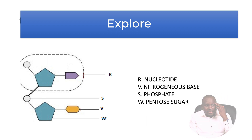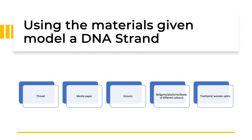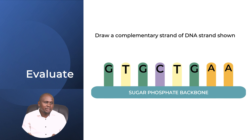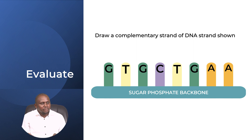We have explored the main parts. I've already mentioned the materials that can be used to come up with a model — we may look at modeling in the next lesson. Now let's evaluate ourselves: can we draw a complementary strand of DNA? We have a strand with G, T, G, along with sugar and phosphate. Let's look at the answer.